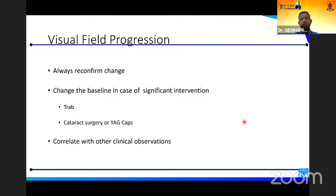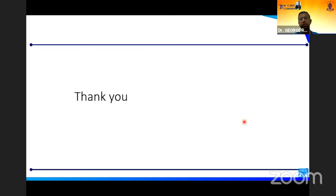In addition to all these, you should always reconfirm change. Meaning any change on a single field is not enough to decide that things have become worse. Always reconfirm change. Change the baseline even if you do a trabeculectomy, cataract surgery, or YAG caps, and always correlate with other clinical observations before you decide that this progression is because of glaucoma. Thank you.